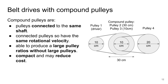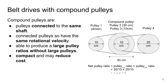In this example, we have pulley 1 as the driver, and a compound pulley in the middle which has pulley 2 and pulley 3 connected to the same shaft. The net pulley ratio equals the pulley ratio between pulleys 1 and 2, multiplied by the pulley ratio between pulleys 3 and 4, which gives us 30 divided by 10 multiplied by 20 divided by 10 — that is 3 times 2, equals 6.